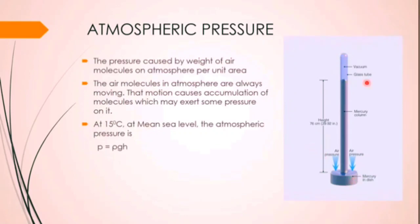The barometer is filled with mercury. It has a glass tube which is open at one end and closed at the other. Initially it is completely filled with mercury and placed inverted in a mercury dish. After that, some mercury drops until it is stopped by atmospheric pressure. We then measure the height of the mercury level.